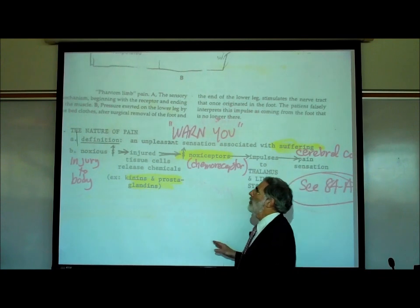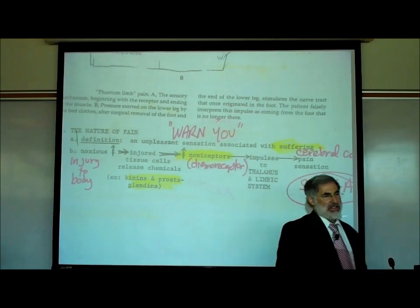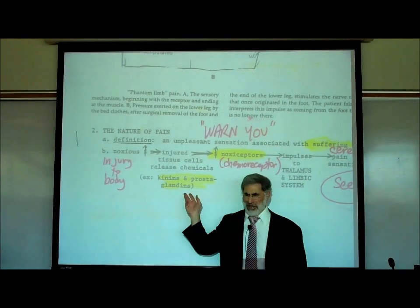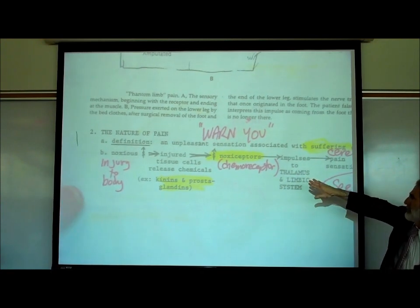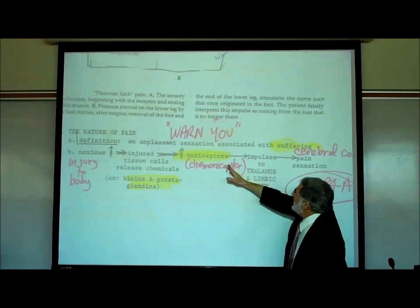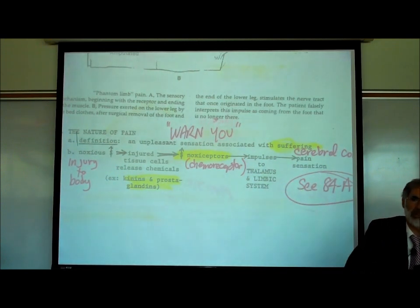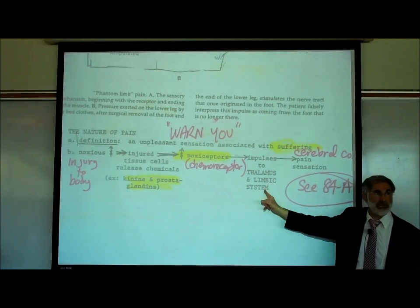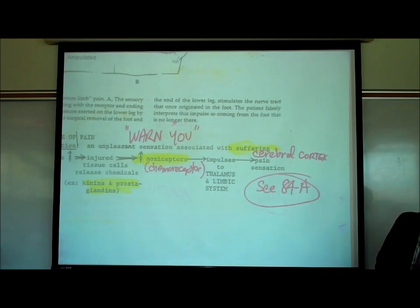What activates the pain pathway begins with injury to cells. The injured cells release chemicals, including kinins and prostaglandins. Those chemicals activate the nociceptors, which are chemoreceptors. They send signals to the thalamus and limbic system — the center of emotions, where the suffering kicks in — and then the signal goes to the cerebral cortex.